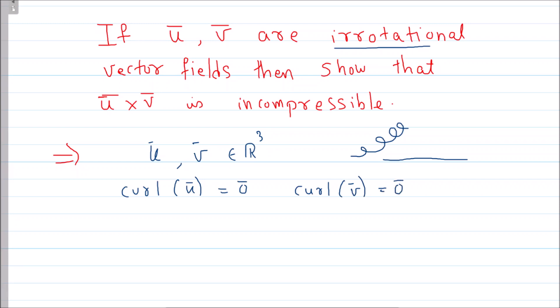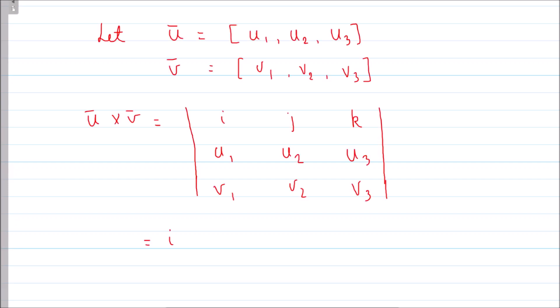What we want to show is that if we take the cross product of two irrotational vectors and then take its divergence, the answer is always zero. Incompressible means the divergence of a vector is zero. Now, how do we prove this? The proof is not that difficult.